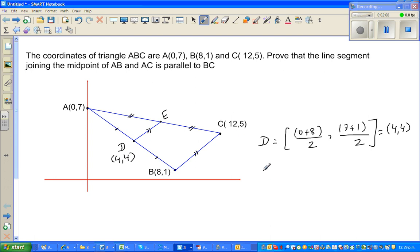The coordinate of E has the same logic. You add the x-coordinate of A and C and divide it by 2. So I hope you can understand directly, 0 plus 12 is 12, divided by 2 is 6. And the y-coordinate is the same. 7 plus 5 is again 12, divided by 2 is 6. So E is 6 comma 6.